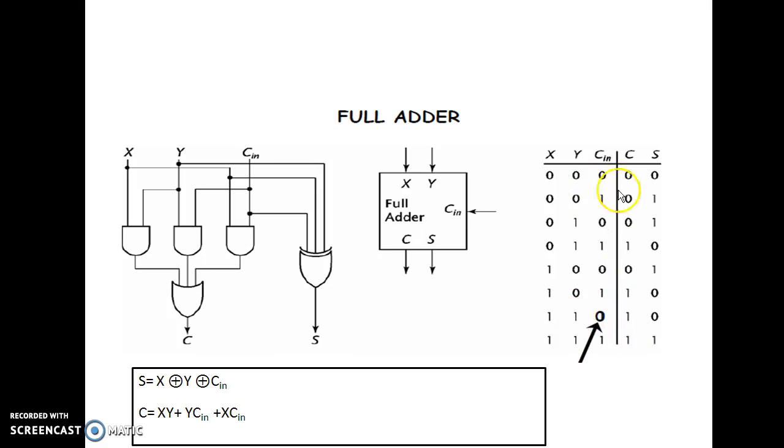And from the truth table, after solving your equations for c and s, this is the final expression which we get. You can solve using K-map or any other technique. This is the Boolean expression which we are supposed to realize. Once we reach this stage, it is the same as what we have done in the previous video.